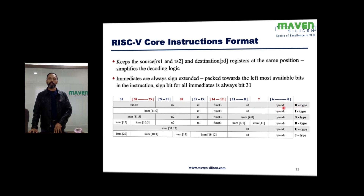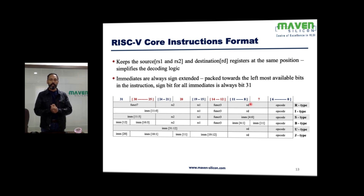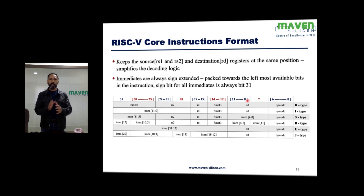The opcode defines whether it is of type R. If you look at all these registers — RS1, RS2, and Rd — they each require 5 bits, since there are 32 registers overall. We can use any register as either a source or destination register except X0, which is always hardwired to 0. So we need a minimum of 5 bits to address 32 registers. Funct3 uses 3 bits and funct7 uses 7 bits.